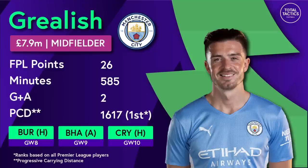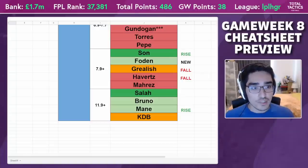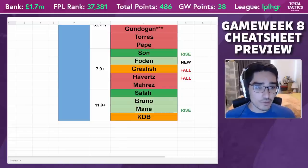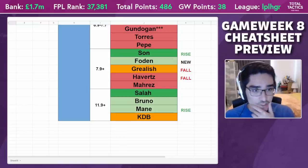Grealish has fallen. I think he's actually nailed more than Foden, to be honest, but the worry is the production isn't there, and Foden seems much more direct and attacking — which you need as an FPL asset. It may still take some time before Grealish comes good later in the season, but right now the production just isn't there to justify picking him when you can stretch your cash to go for someone like Son.